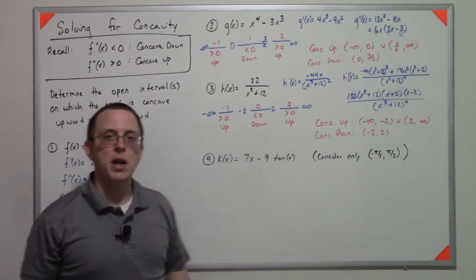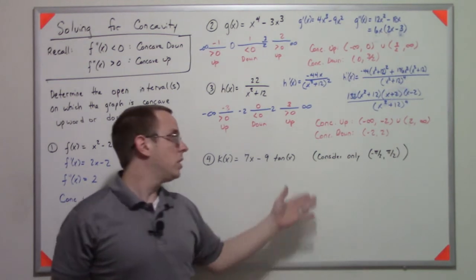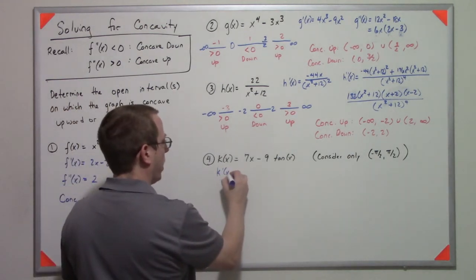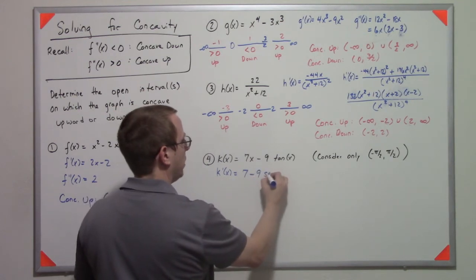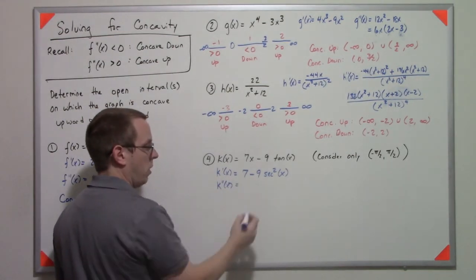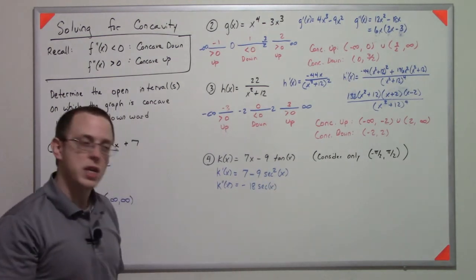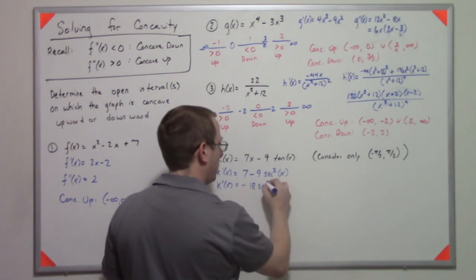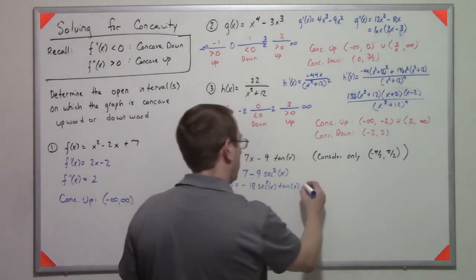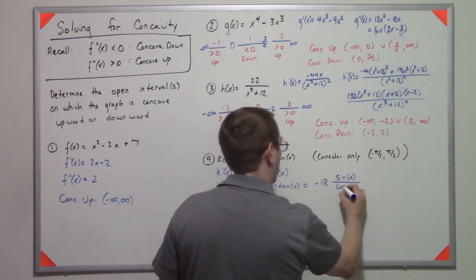And finally we have 7x minus 9 tangent x. Now we only want to care about the negative pi over 2 to pi over 2, and that's because this function gets a little wonky as you move along. The numbers get a lot harder. So if we take its derivative, k prime of x, we get 7 minus 9 secant squared x. If we take its double derivative, well the 7 will disappear, so then we have to use the chain rule, we end up with negative 18 secant of x, but the derivative of secant of x is secant tangent, so we end up with secant squared x tangent of x, which may be easier to write in terms of its elementary sine and cosine functions, which is negative 18 sine of x over cosine cubed x.